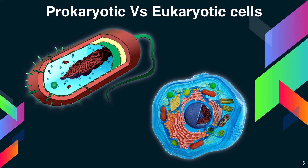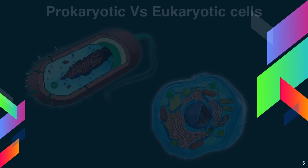Typically, prokaryotic cells range from 0.1 to 5.0 micrometers in diameter. That is significantly smaller than eukaryotic cells, which usually have diameters ranging from 10 to 100 micrometers.